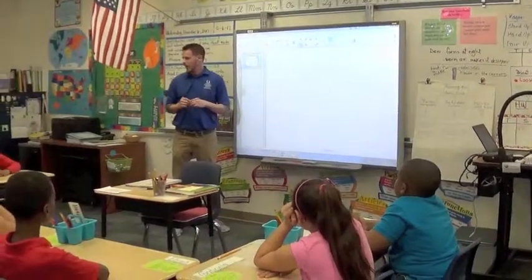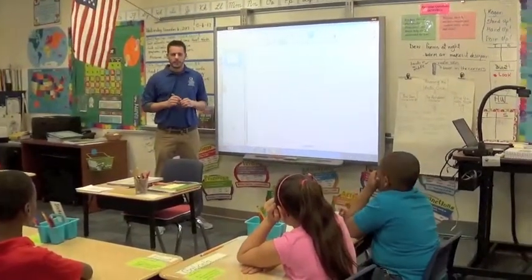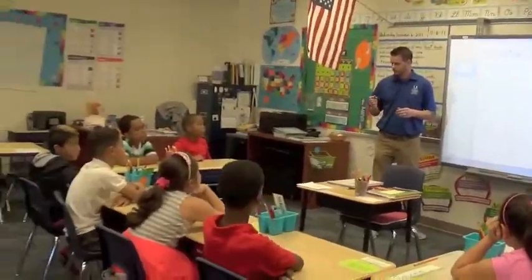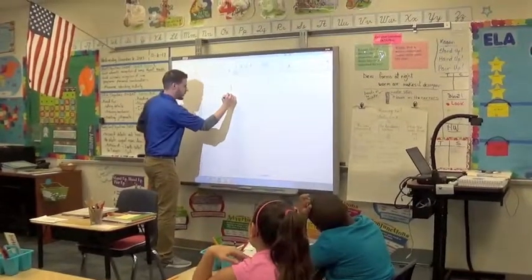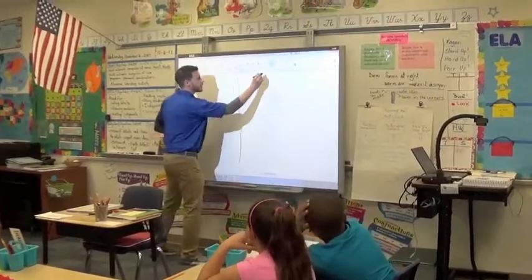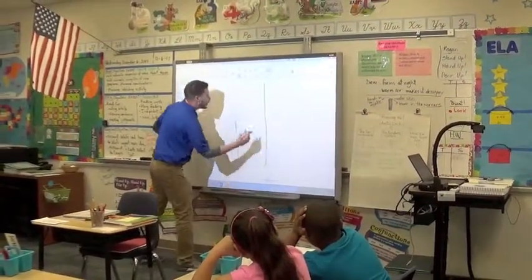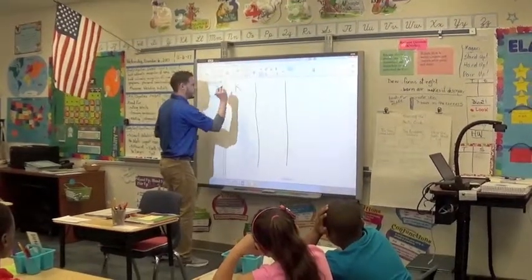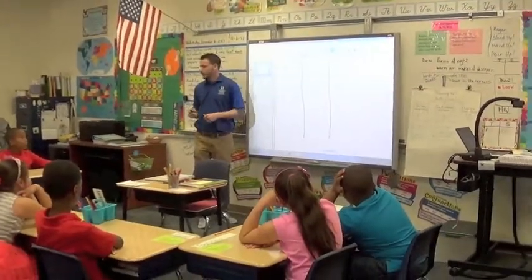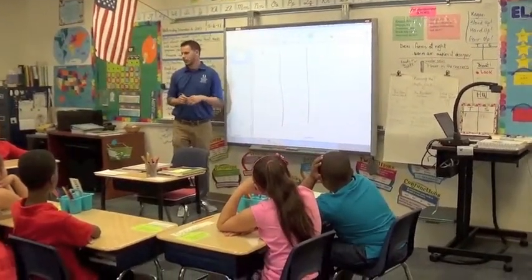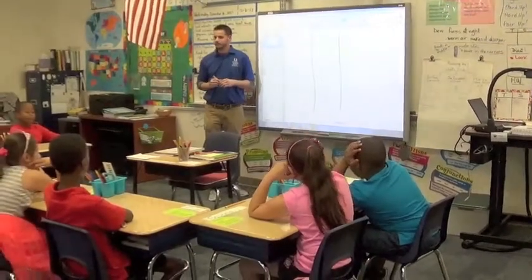What we're going to do is a KWL chart. Does anyone know what a KWL chart is? So we break it off into three letters — the K, which is what you know. We're going to talk about what you know about the International Space Station. What have you learned? Because we learned a lot of information. What did you just learn?